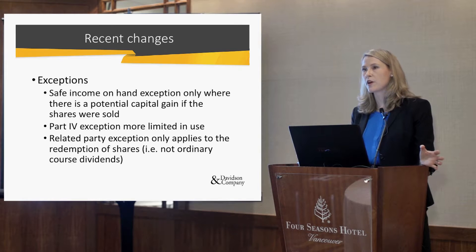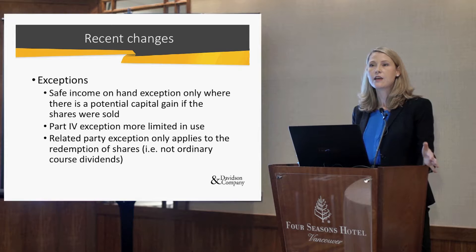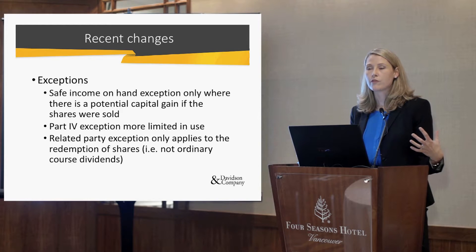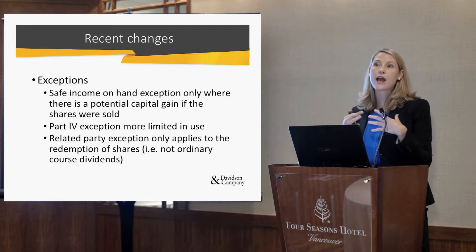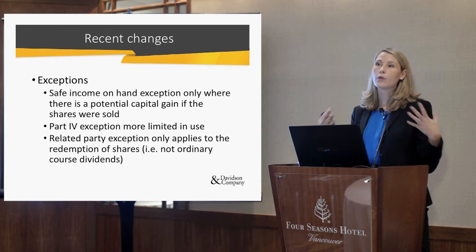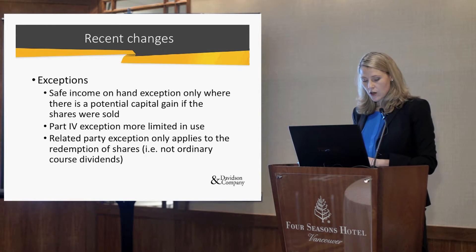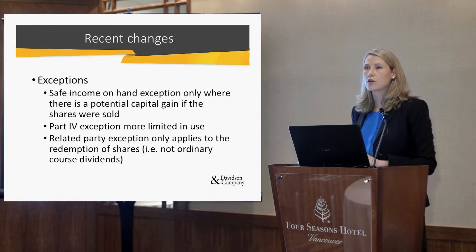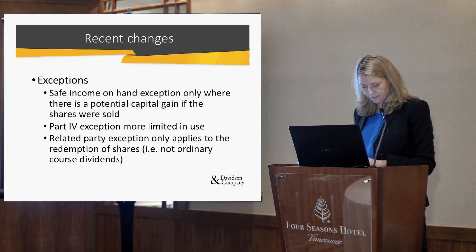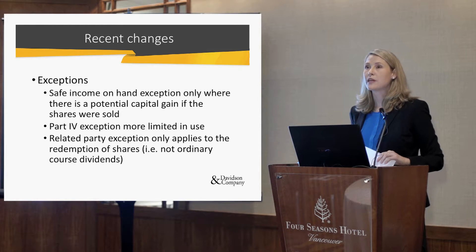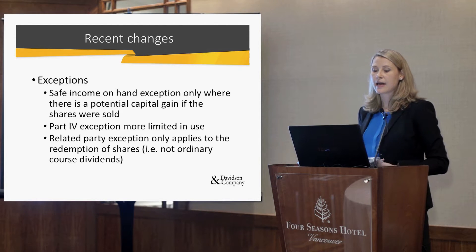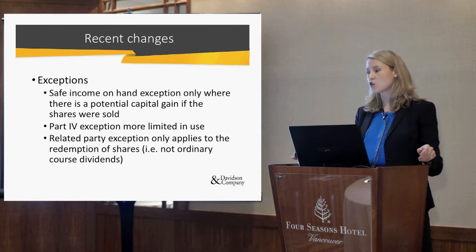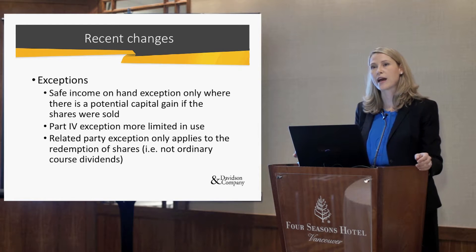This is a major change, and one of the big things where a lot of us suddenly started looking at this — we've relied on the related party rules, companies owning each other in a related group getting tax-free dividends, and now we have to step back and think about how we're going to deal with this. In a lot of cases, you're actually going to have to go back and look at the safe income on hand. Since a lot of companies have been operating for many years, it's quite a big calculation, especially if you have to go back to the founding of the corporation.